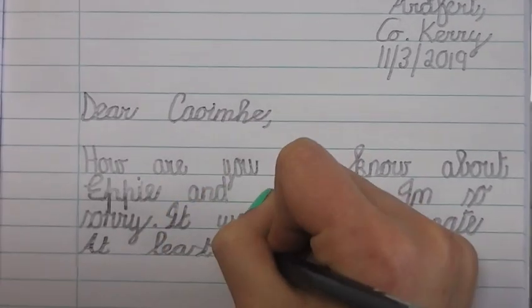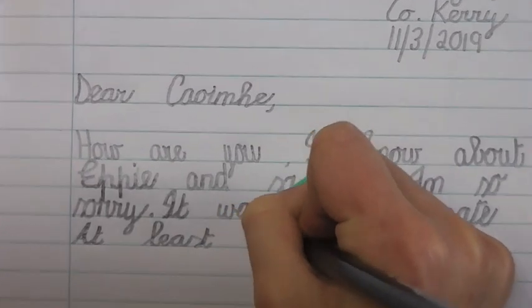Dear Mum, I know it's hard having four children and one dog. It all works out. I know about Eppie and Saoirse. I am so sorry. It all works out.